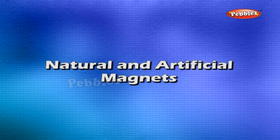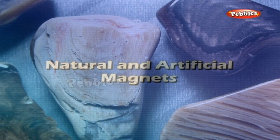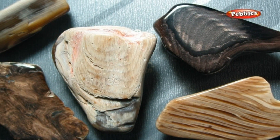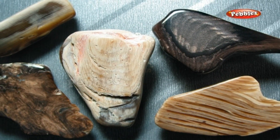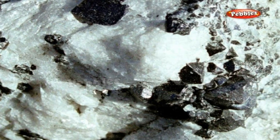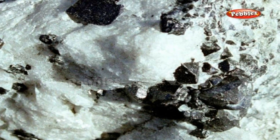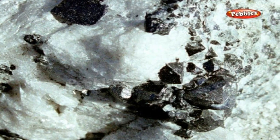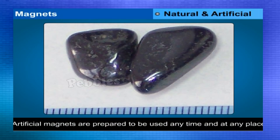Loadstone and magnetite are natural magnets because they are found in nature. Natural magnets have a low magnetic power. Moreover, such magnets are not found at every place. So, artificial magnets are prepared by man to be used at any time and at any place.